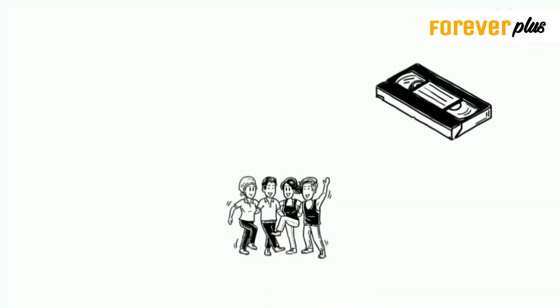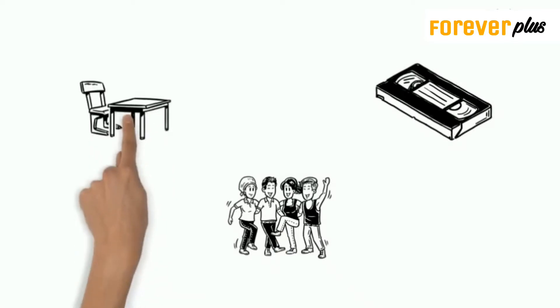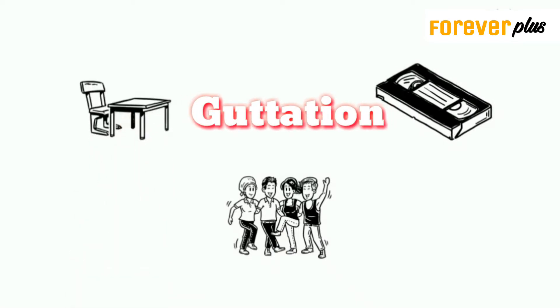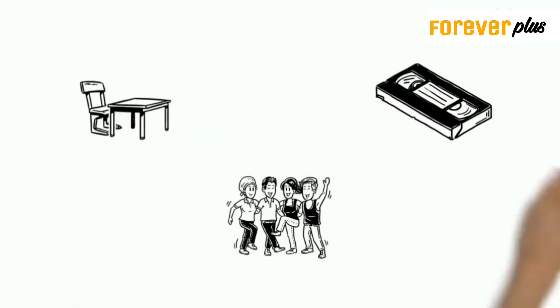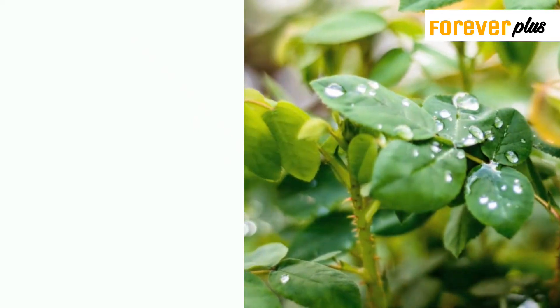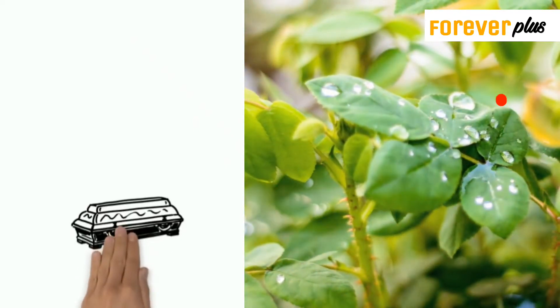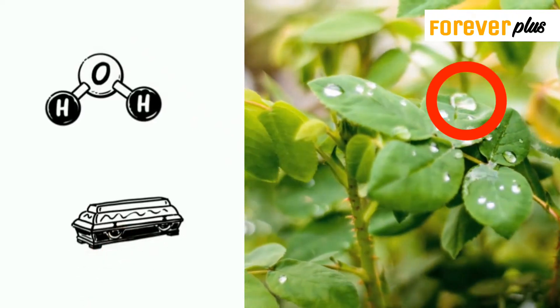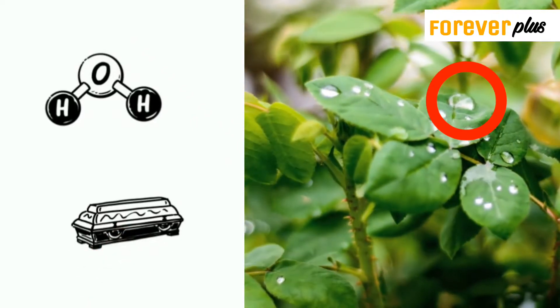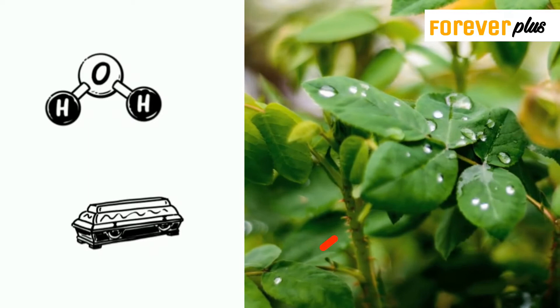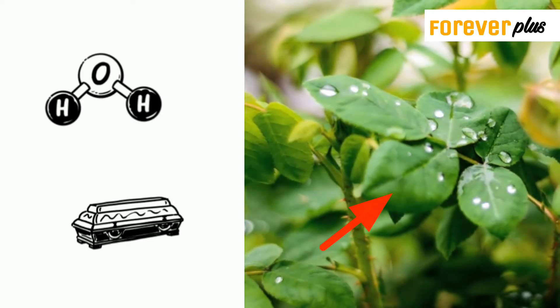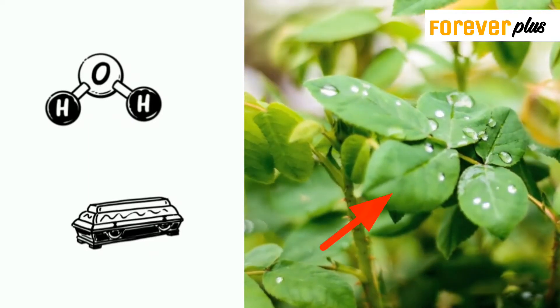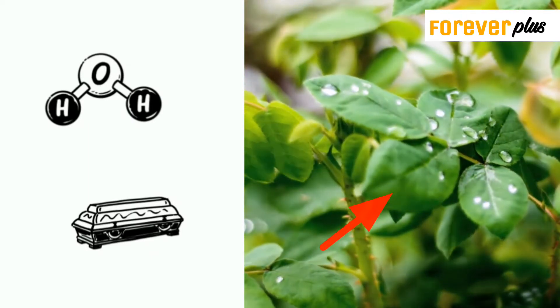Guttation is the loss of water in the form of water droplets from hydathodes — small pores on the leaf margin of small herbaceous plants.